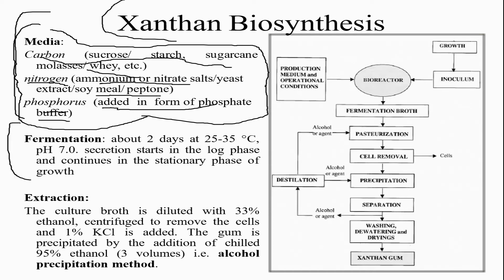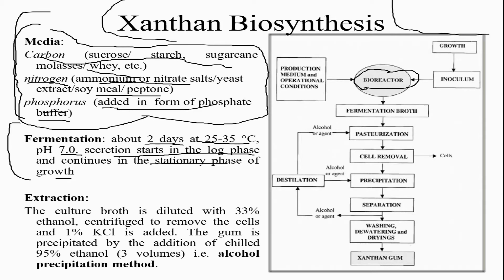Xanthan biosynthesis requires a fermentation temperature of about 25 to 35 degrees Celsius, a duration of two days, and a pH of 7. Secretion starts in the log phase and continues in the stationary phase. The entire reaction is carried out in a bioreactor, where the fermentation stage gets carried out following a normal growth curve.